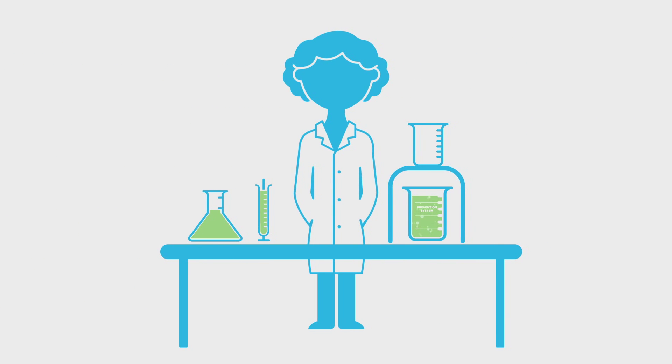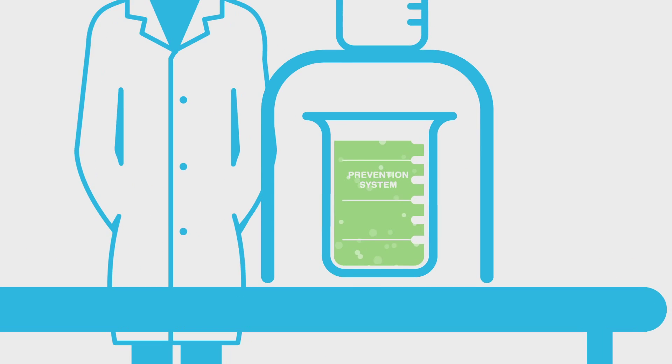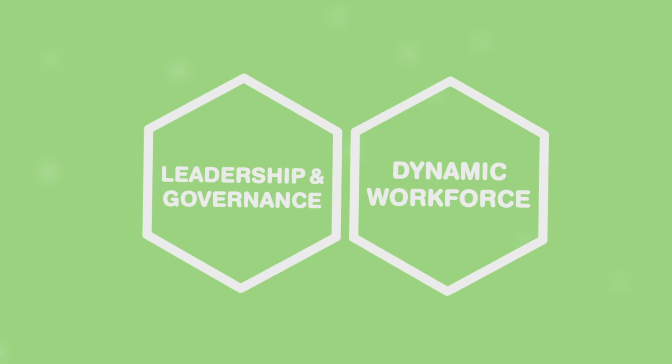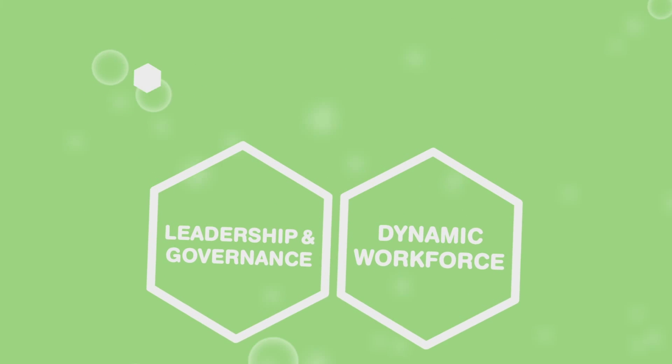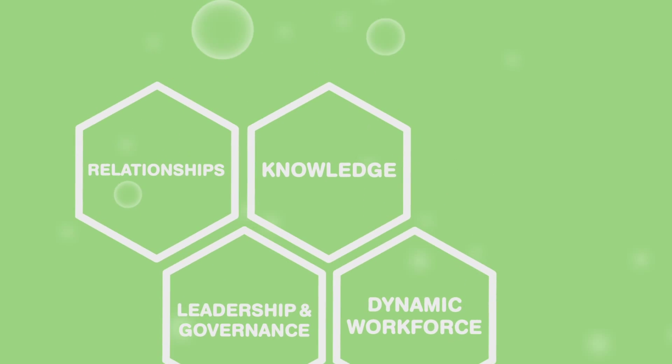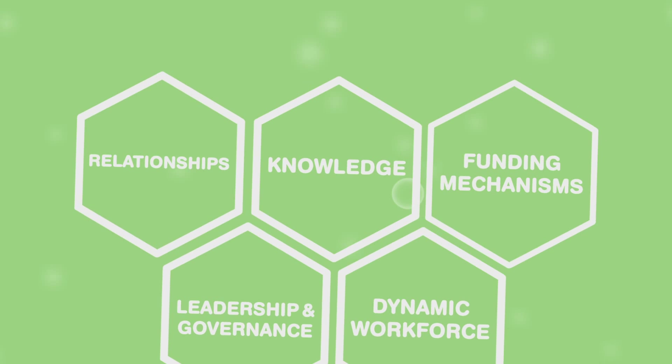To inform the evolving science of systems thinking, there are five essential building blocks in a strong prevention system. Leadership and governance, a dynamic workforce that thinks and acts systems, relationships that drive change, knowledge co-creation to action and funding mechanisms.